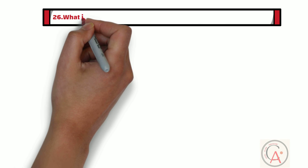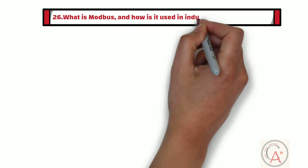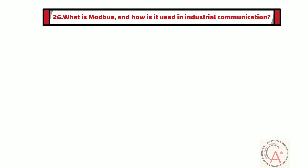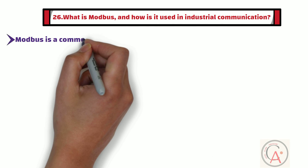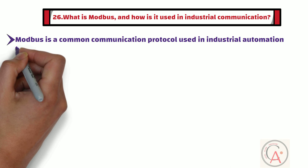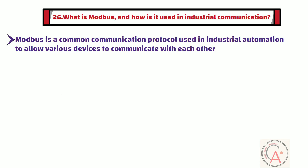The 26th question is: what is Modbus and how is it used in industrial communication? Modbus is a common communication protocol used in industrial automation to allow various devices to communicate with each other. It is often used for data exchange between PLCs and other equipment.